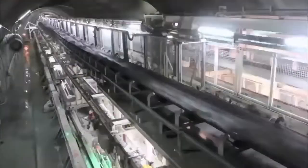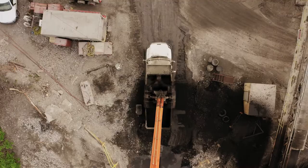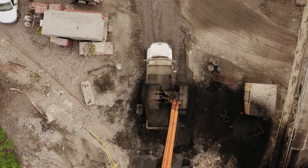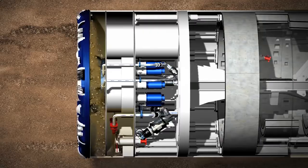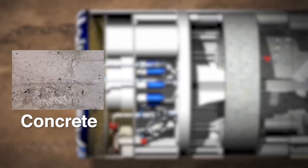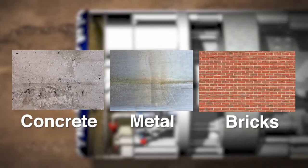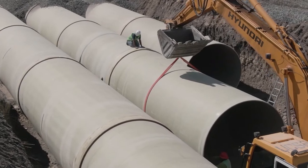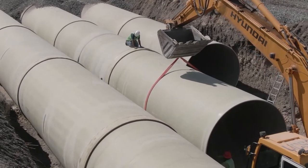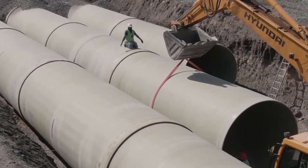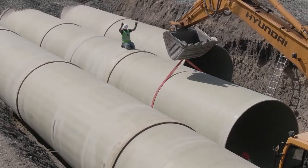The dirt is hauled to the shaft, lifted above ground, and hauled further off-site. Once the boring is complete, the tunnels are lined with either concrete, metal, or bricks to keep the tunnel from collapsing. If necessary, depending on the design of the sewer, additional pipes are brought into the tunnels and connected manually by the workers.